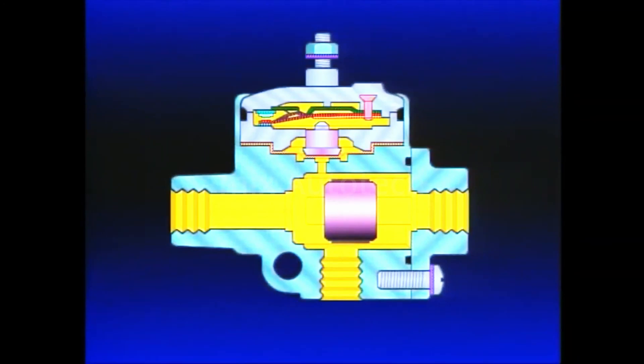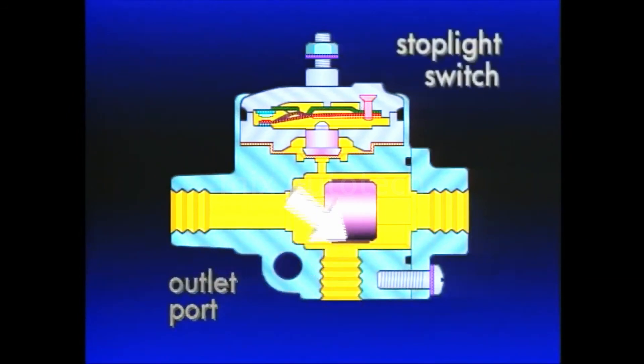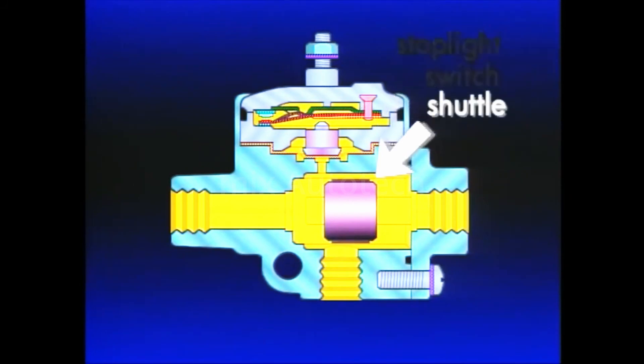Like a standard double-check valve, the DS-II has two inlet ports and one outlet port. The stoplight switch is positioned in the middle of the double-check valve opposite the single outlet port. A shuttle riding in a guide travels between the two inlets.